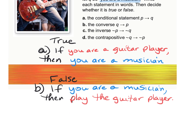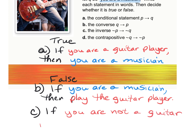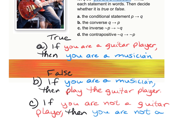Now we'll do the inverse. Remember, for the inverse we keep it in the same original order but negate it. So: if you are not a guitar player, then you are not a musician. And this one is false — even if you don't play the guitar, you could still be a musician.